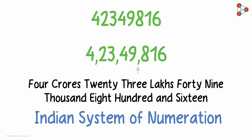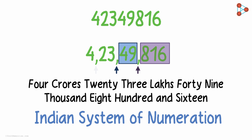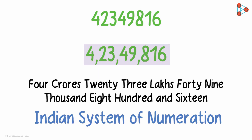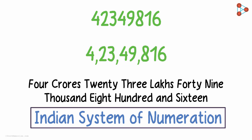So I add a comma after 3 digits, leave 2 more digits and then mark another comma, and then another comma after 2 more digits. Remember, whenever we are marking commas, we go from right to left — always. It tells us that the number is 4 crores 23,49,816. That's how the Indian system of numeration works.